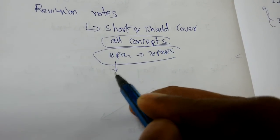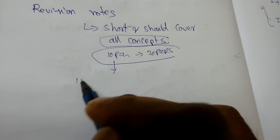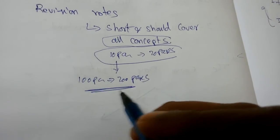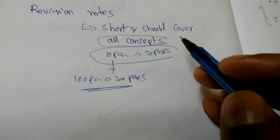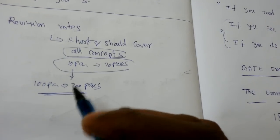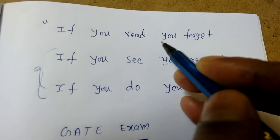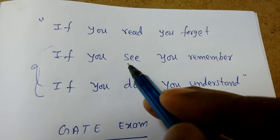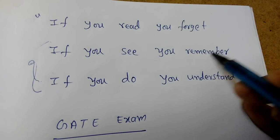At the final stage, we only need revision notes. It's not like we have to revise 100 or 200 pages of notes - that is not required. We already know the concepts, but we need to revise them quickly in the form of formulas. When you keep reading, you may forget after some time - maybe one or two days. But when you see a formula visually, you remember it for one or even two months.